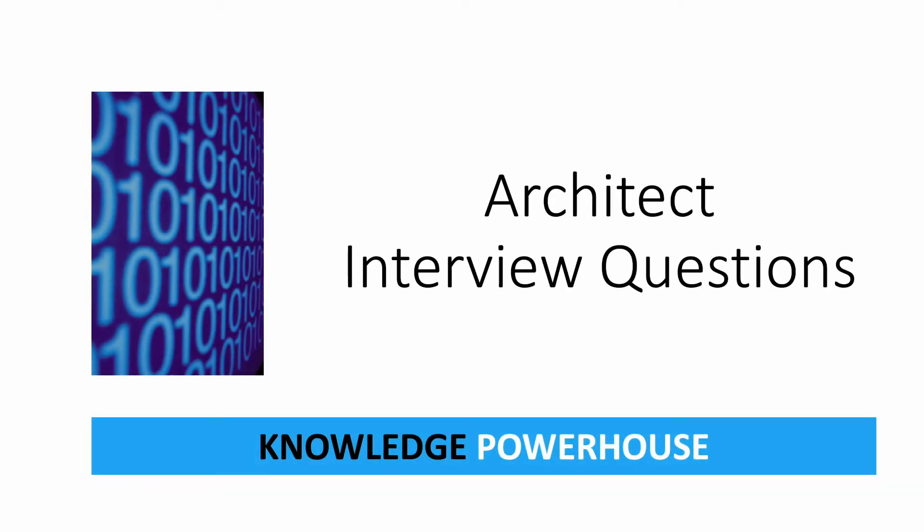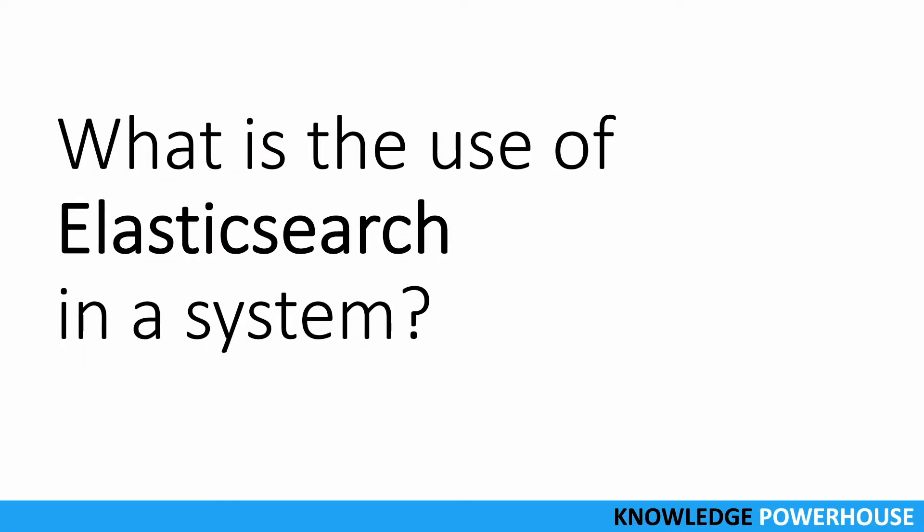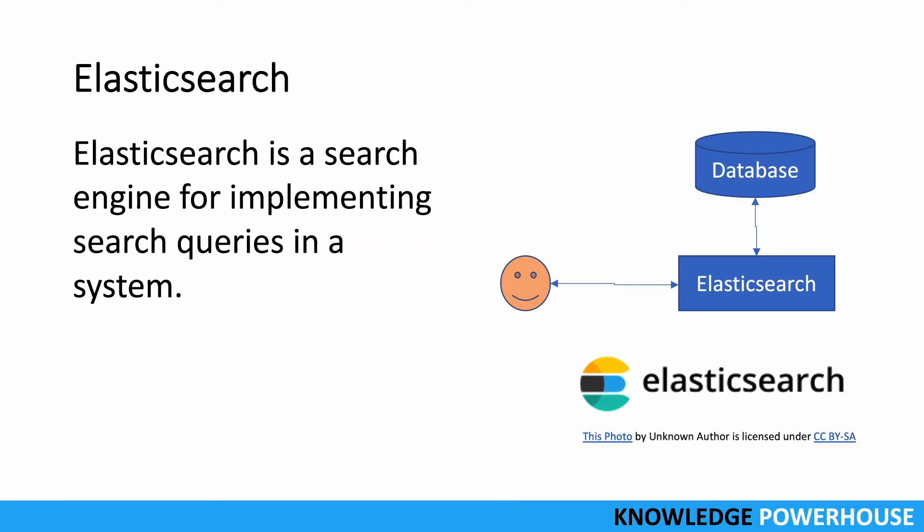Hello and welcome to the architect interview question series. In this series we are covering good questions on system design and architecture software. Our next question is: what is the use of Elasticsearch in a system? Elasticsearch is a very good software that is being used in many companies and enterprises. Elasticsearch is a search engine and it is used for implementing search queries in a system.